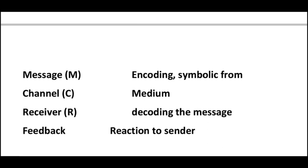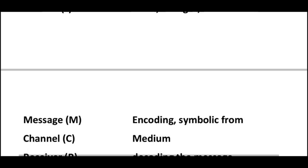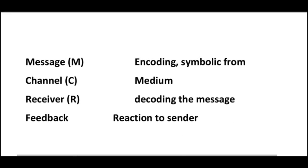M stands for message, which is encoded using symbolic information. C stands for channel. R stands for receiver, who decodes the message. Feedback is the reaction sent back to the sender — when the receiver gets a message, they respond back.